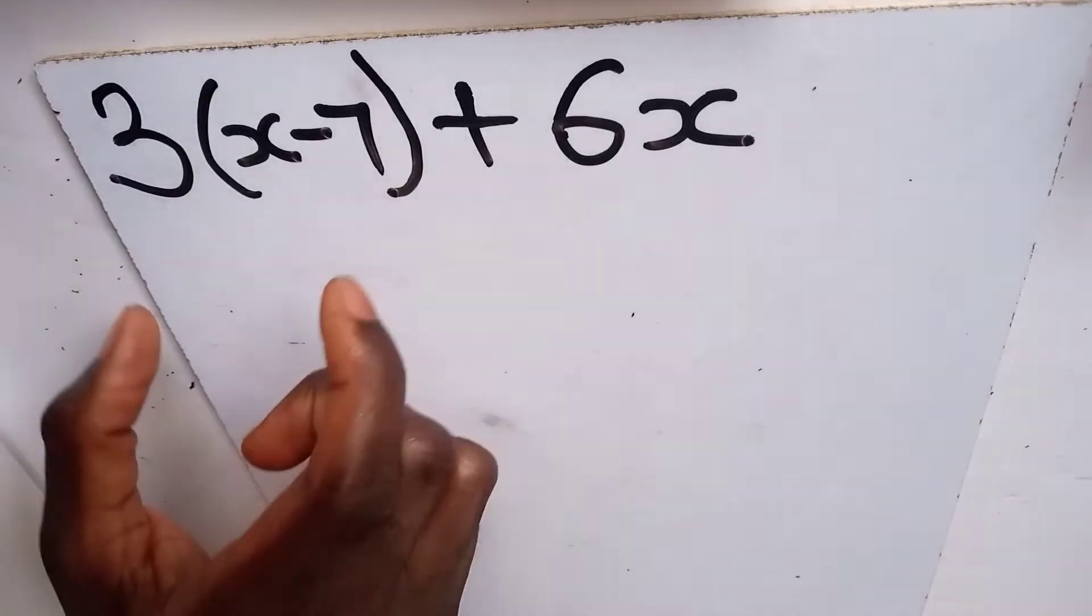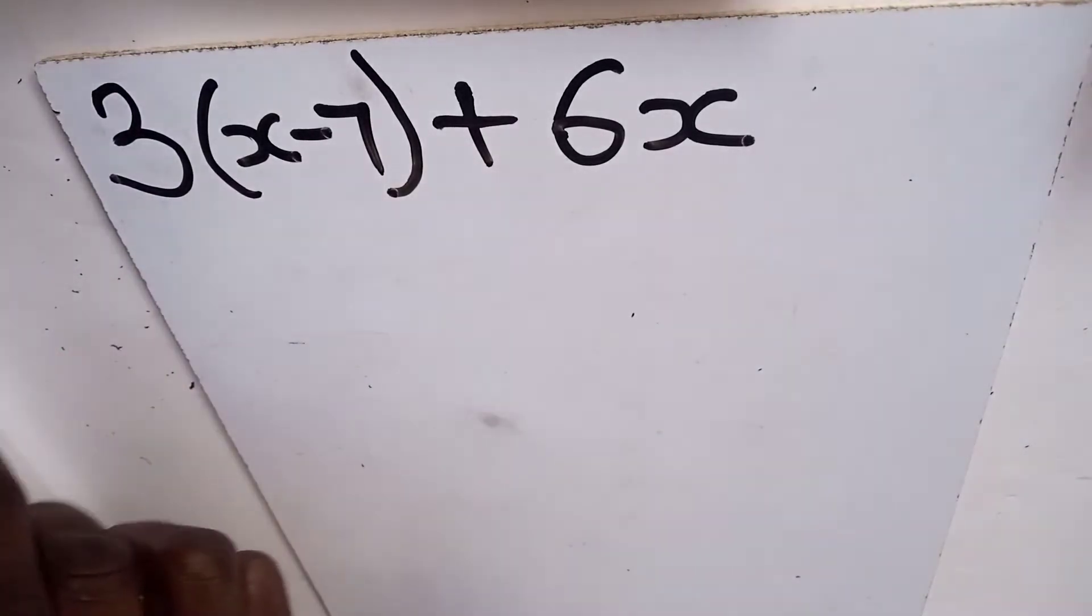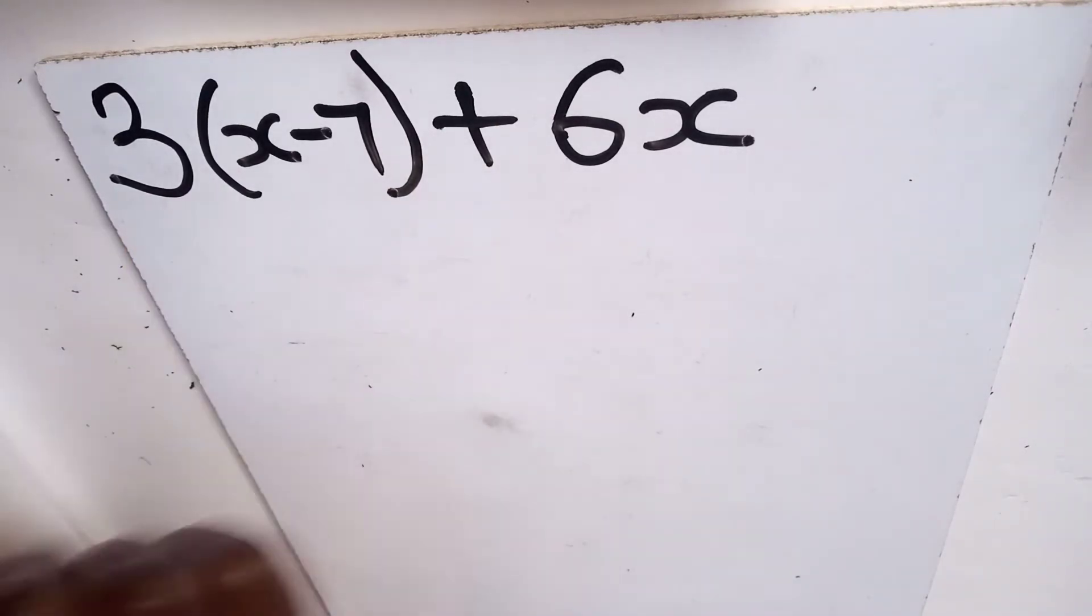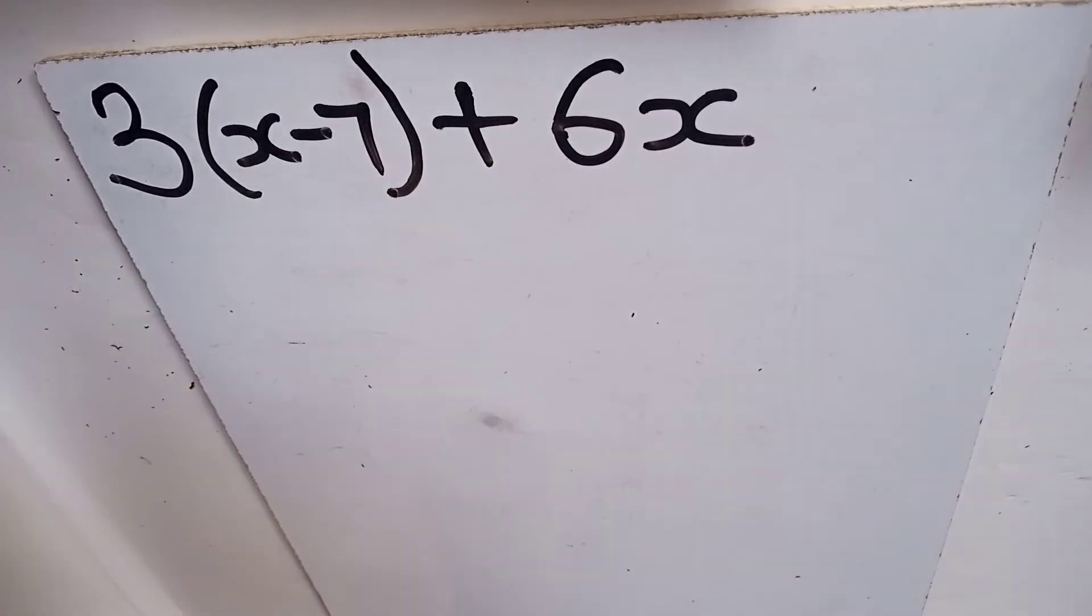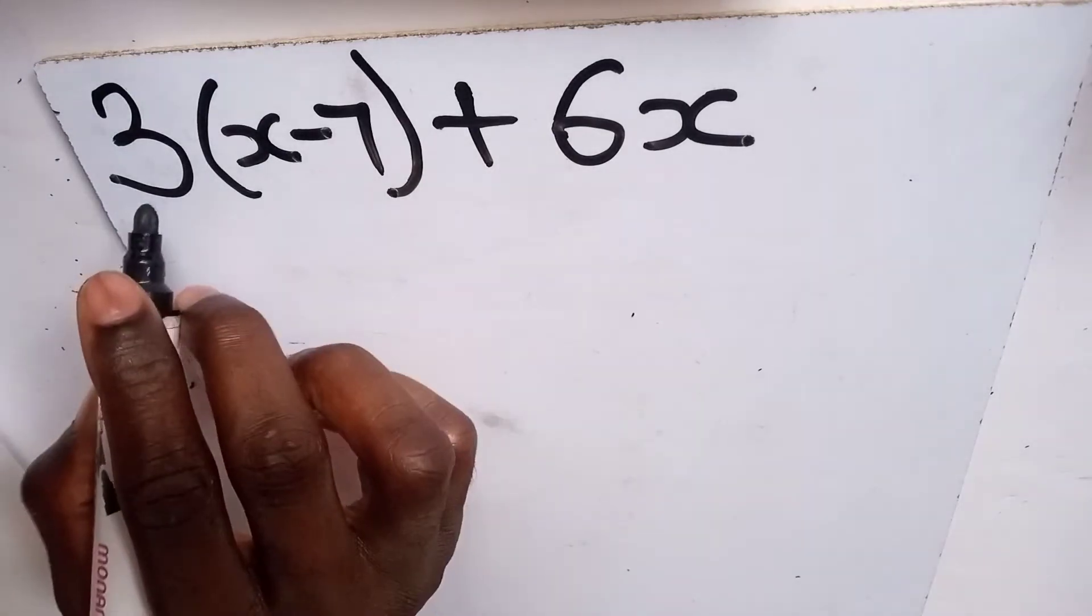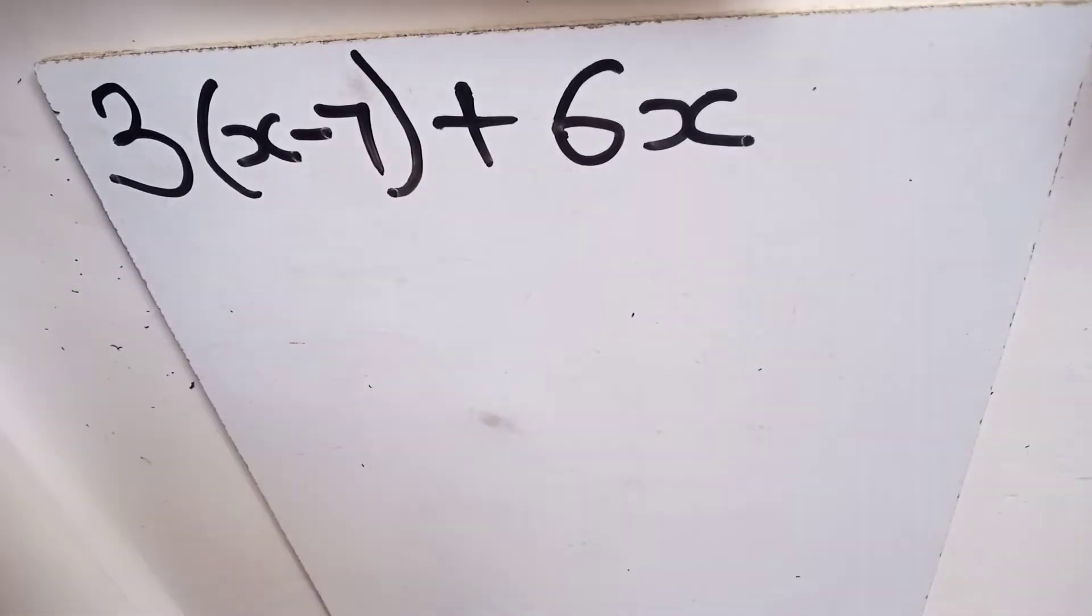This is the bracket we are having here, and to be able to expand this bracket you need to multiply the number outside the bracket by each term in the brackets. So 3 is going to multiply the x and also multiply the negative 7.